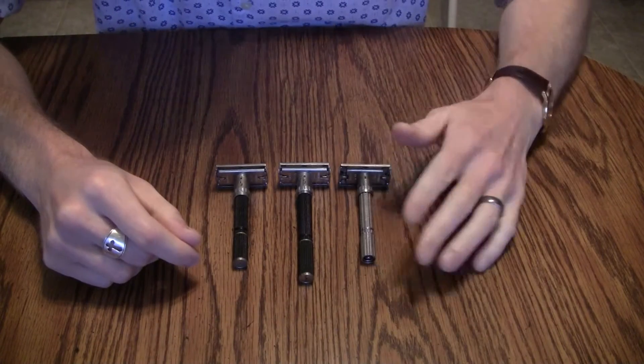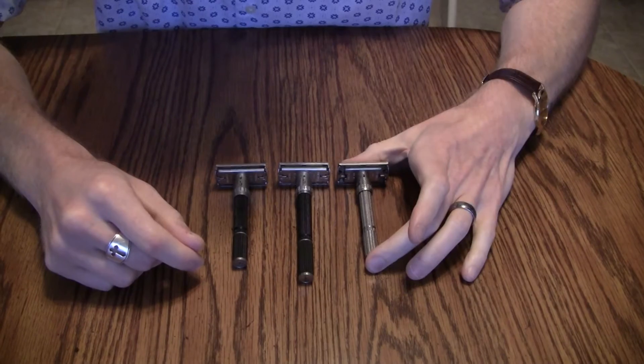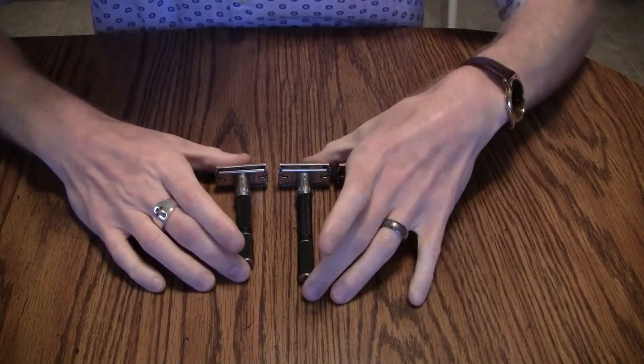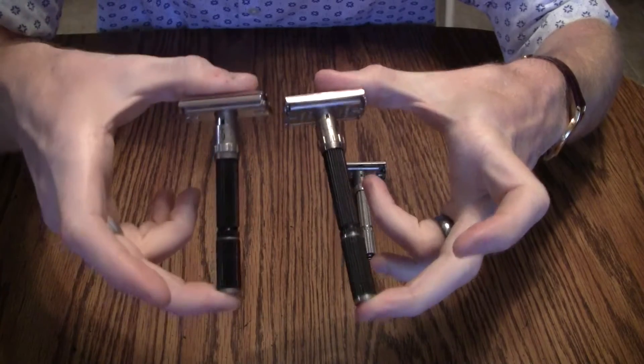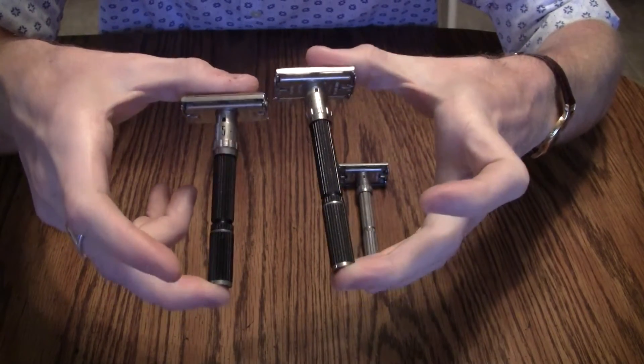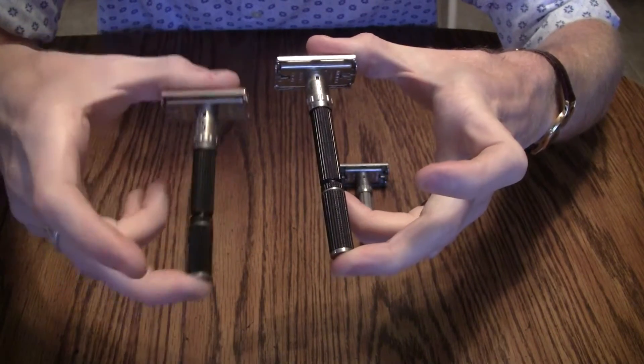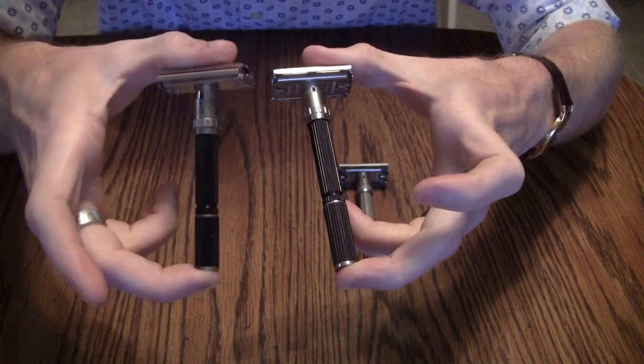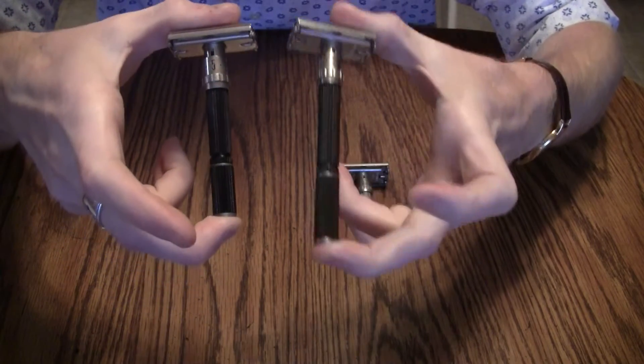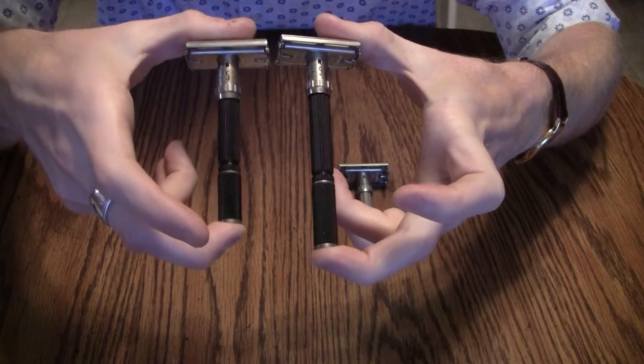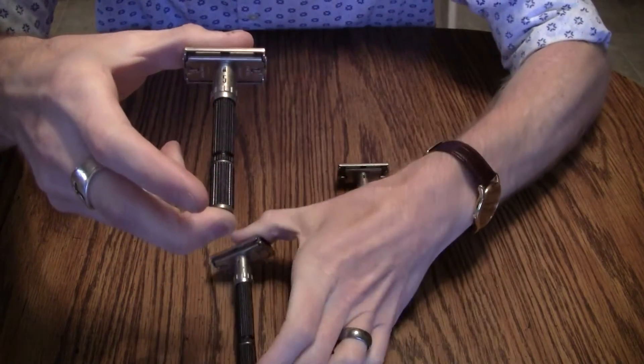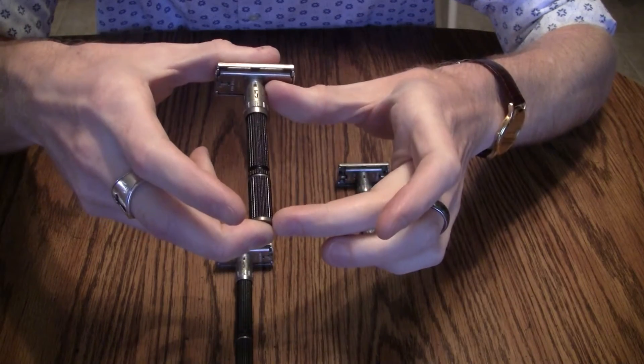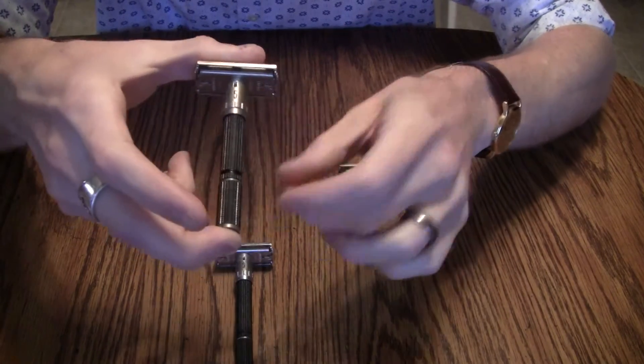After that, after the Slim, they came out with the Super Adjustables, and there is a short-handled version and a long-handled version. And the short-handled version is called the 84. Some people call them Super 84s. The long-handled version is called a 109 or a Super 109, and that refers to the length of the handle. That doesn't refer to the head, that refers to the handle.